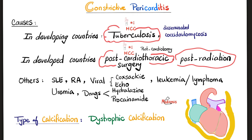Additional causes include disseminated coccidioidomycosis — if tuberculosis can do it, coccidioidomycosis can too, and it is rapidly fatal. More causes: lupus and rheumatoid arthritis, coxsackievirus and echovirus, leukemias and lymphomas, hydralazine and procainamide, and don't forget uremia.